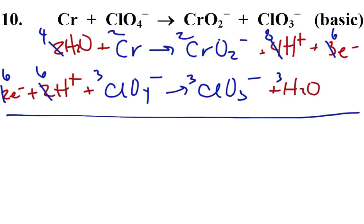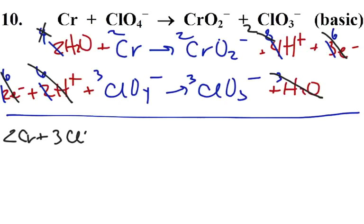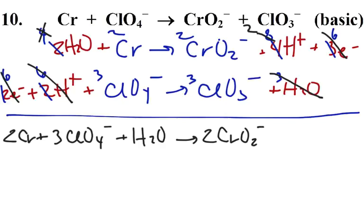Let's put this equation together. We have six electrons - let's cancel them out. For hydrogens: eight hydrogens and six hydrogens, so I can cancel out six here and make this a two. I have four waters on the left and three waters on the right, so all three waters can go away, and that turns into a one. My equation is two Cr plus three ClO4 negatives, plus H2O, turns into two CrO2 one-minuses, plus three ClO3 one-minuses, and two H pluses.